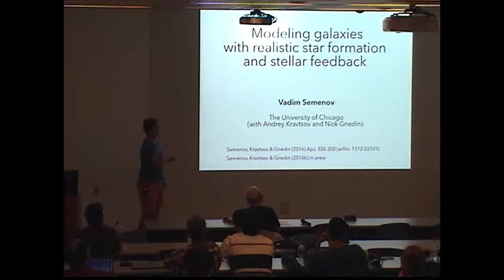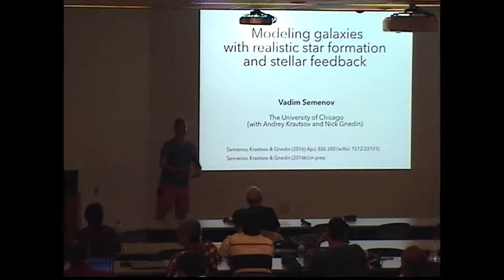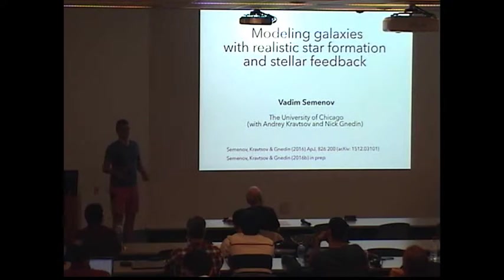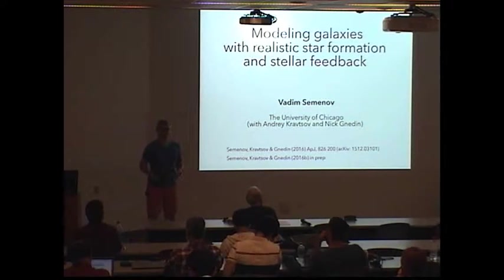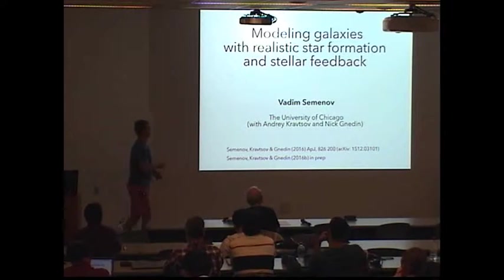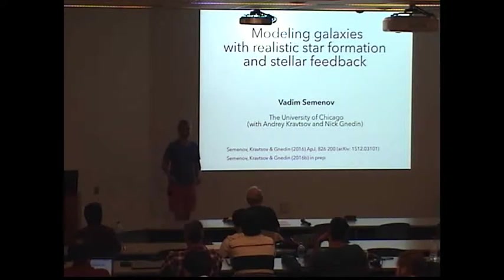So as Andrey already told you, we should all use low efficiencies in galactic simulations in order to produce realistic galaxies. And ideally this efficiencies should be based on some physical picture of what is going on on unresolved scales. And this actually applies to any piece of subgrid physics you include in your code. One of the options is to use direct simulations of physical process going on unresolved scales and then use the results of the simulations as your subgrid models in galaxy formation simulations. So we do this modeling of galaxies with star formation and star feedback prescription which follows from such simulations. And this is what we mean by this word realistic.